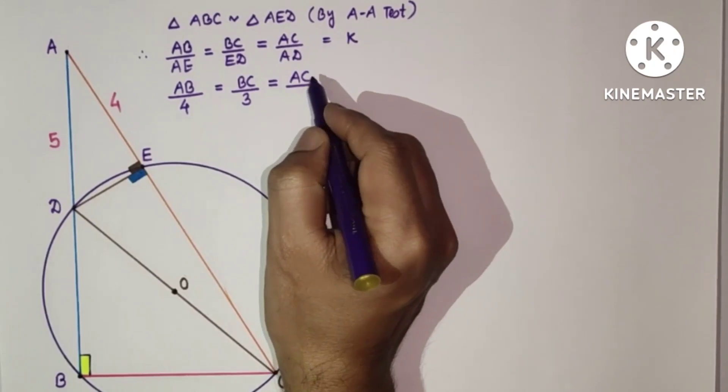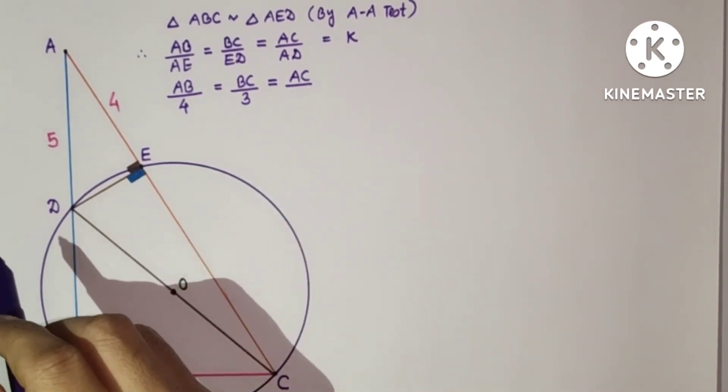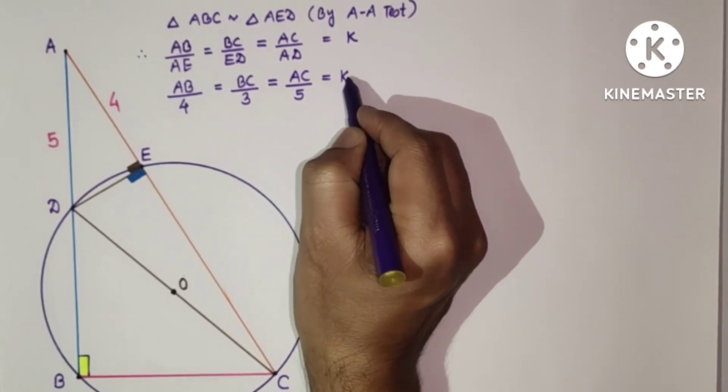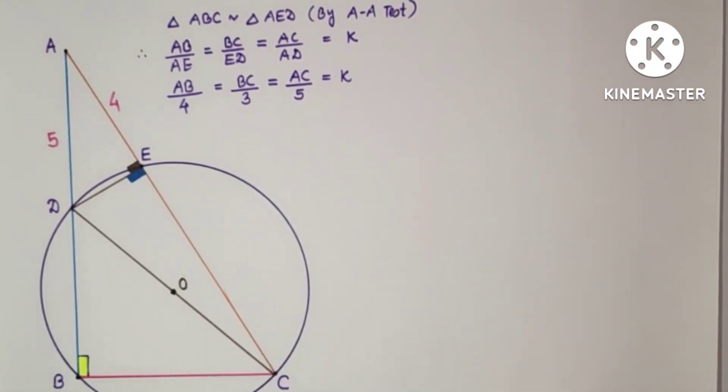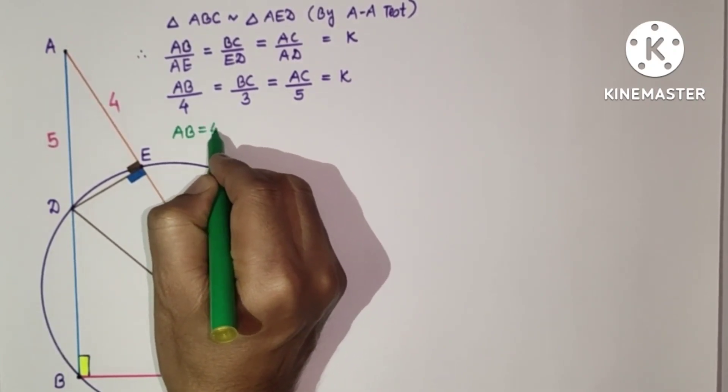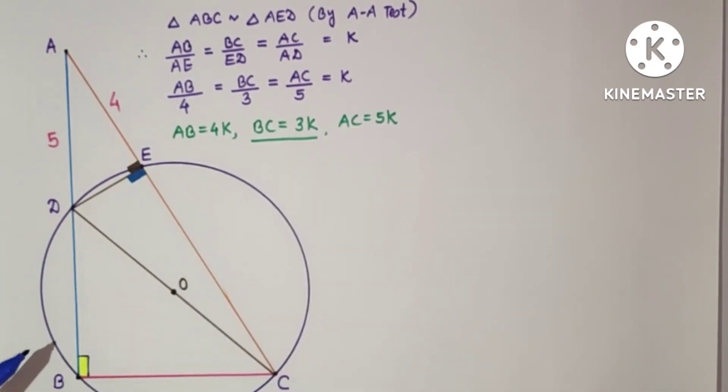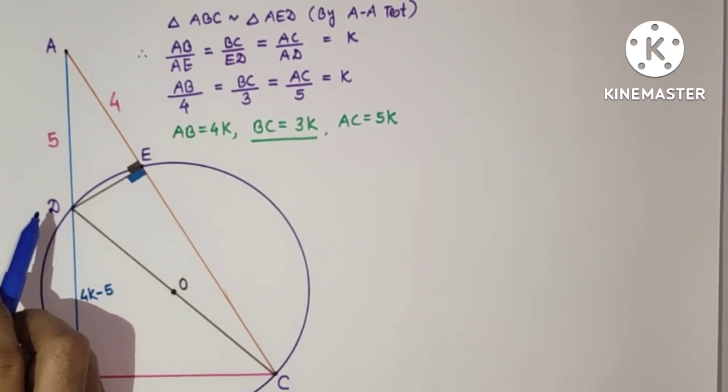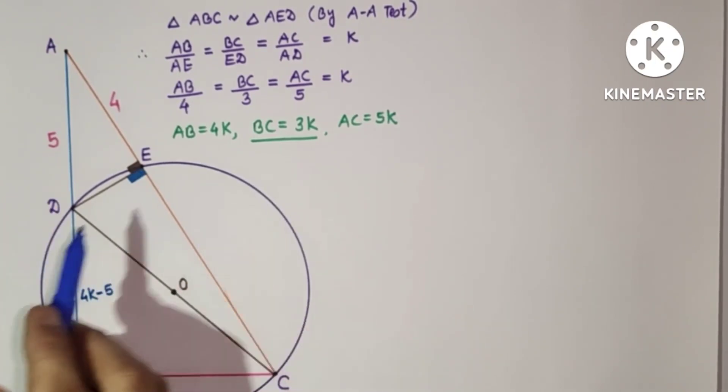So we found AB is equal to 4K, and AD is 5, therefore BD will be 4K minus 5. And the radius of this circle is 6, so diameter will be 12.